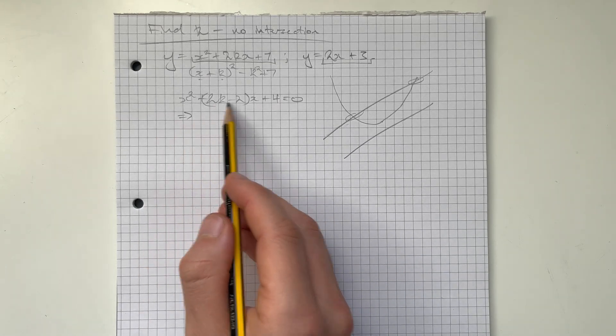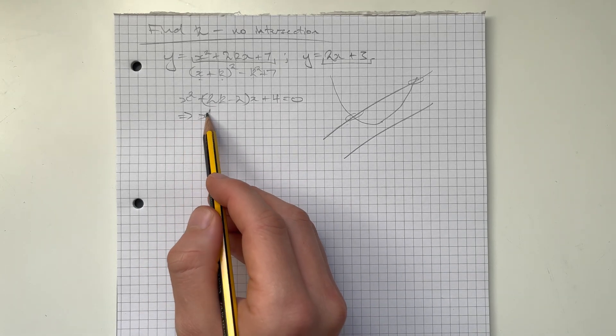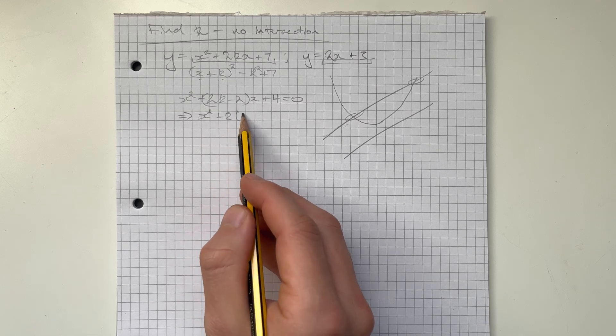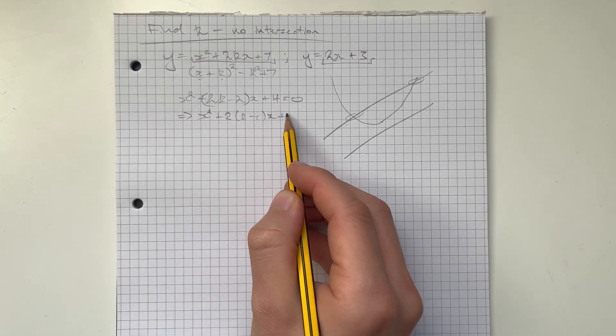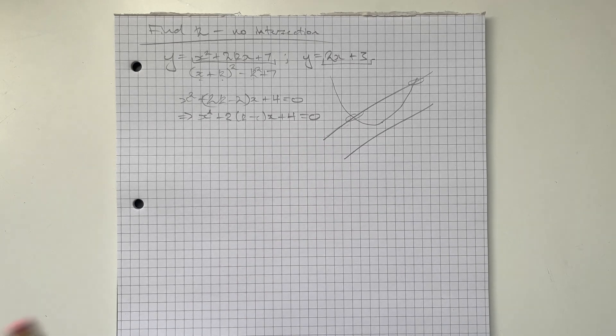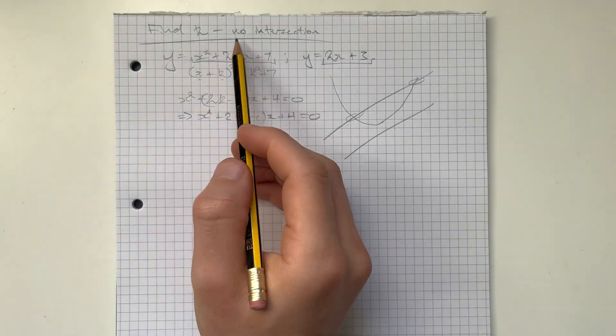So I'm going to factor the two out of this as well. And we've got x squared plus 2 lots of k minus 1 lots of x plus 4 equal to 0. And our goal here is to have no intersections.